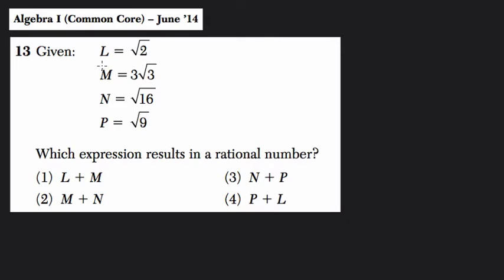Alright, so we're given four numbers. They call them L, M, N, and P. And here we know that L is the square root of 2. That is irrational. That means if we try to represent it as a decimal, the decimal will go on forever without any repeating pattern and without end.